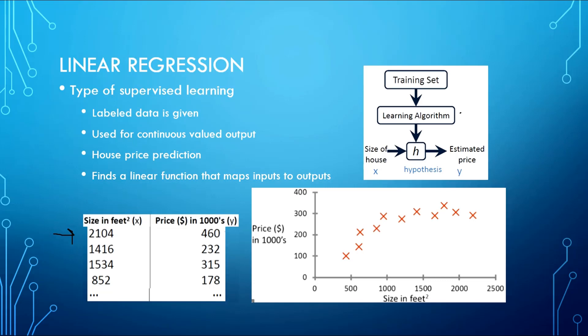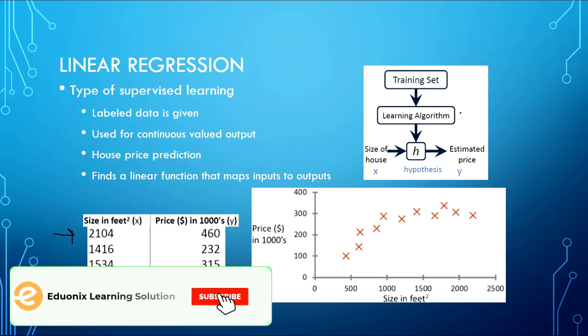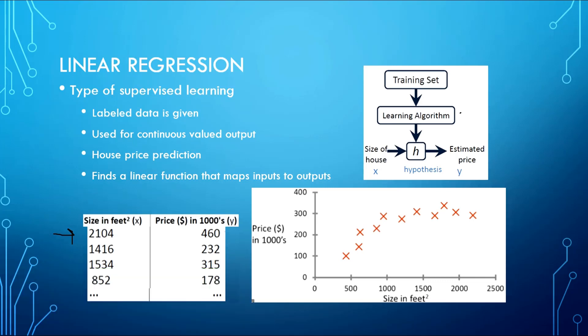Once we have trained our model and found the best hypothesis — the best linear function that maps our training data's input to its output — we can use this hypothesis for predictions. If we want to predict the price of a house whose size is not in our training data, we simply feed the size of that house to our hypothesis and it will return an estimated predicted price.